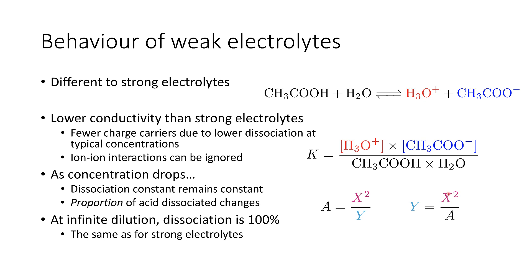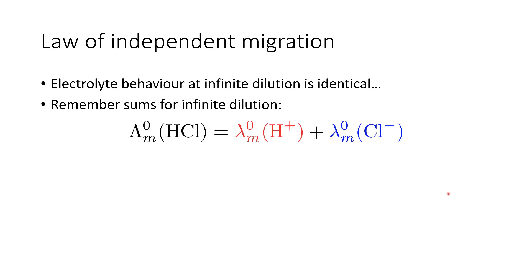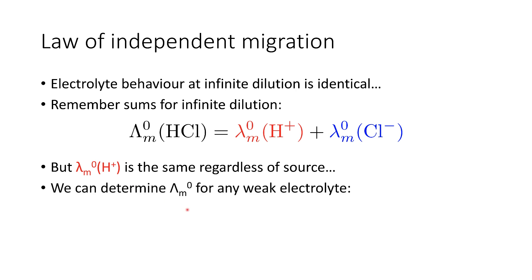Measuring the conductivity of weak electrolytes becomes a challenge. To overcome this, we need to consider the law of independent migration. This describes how ions behave, and its core assumption is that electrolyte behaviour at infinite dilution is identical. At infinite dilution, the overall molar conductivity equals the sum of the molar conductivities of each of the constituent ions. The key point is that the conductivity of the proton is the same regardless of where it comes from — whether from HCl, sulfuric acid, ethanoic acid, or water itself. This allows us to determine the limiting molar conductivity for any weak electrolyte.